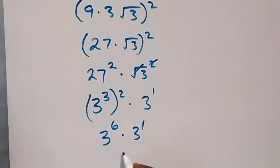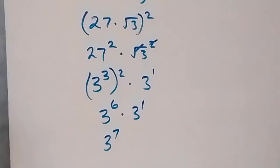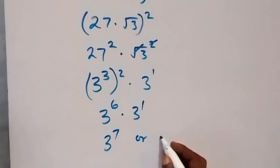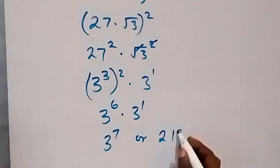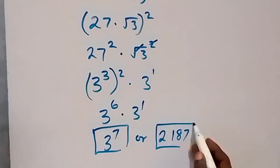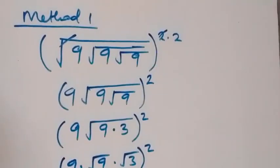This simplifies to 3 raised to the power 7. We can write it as 3 multiplied by itself seven times, and that is 2187. So we have the solution from Method 1. Let's also use another method to solve this.